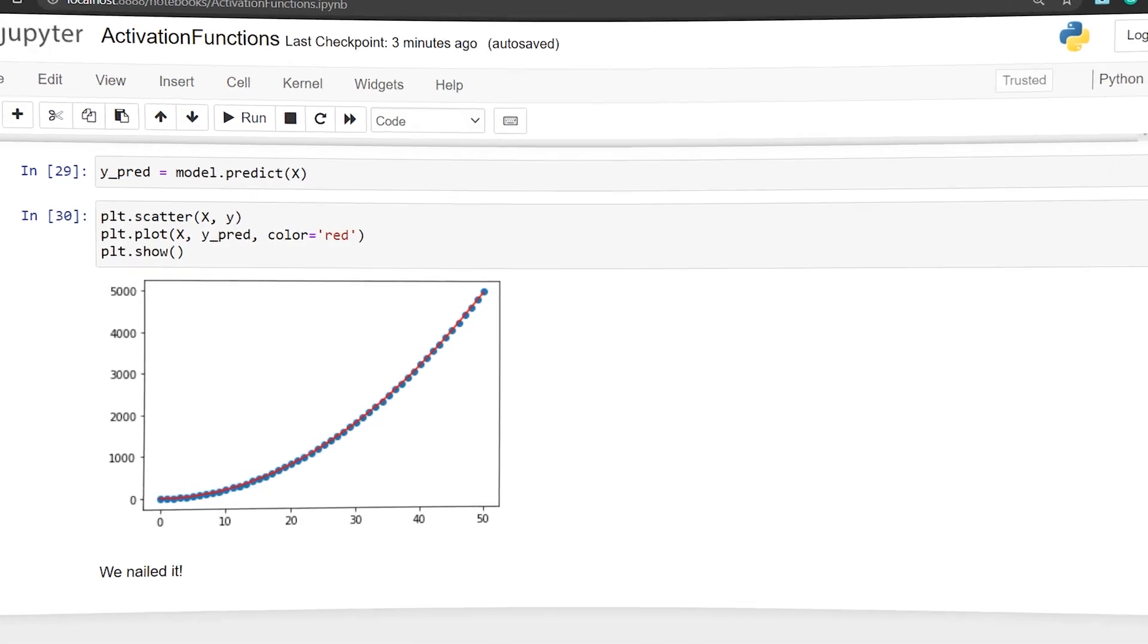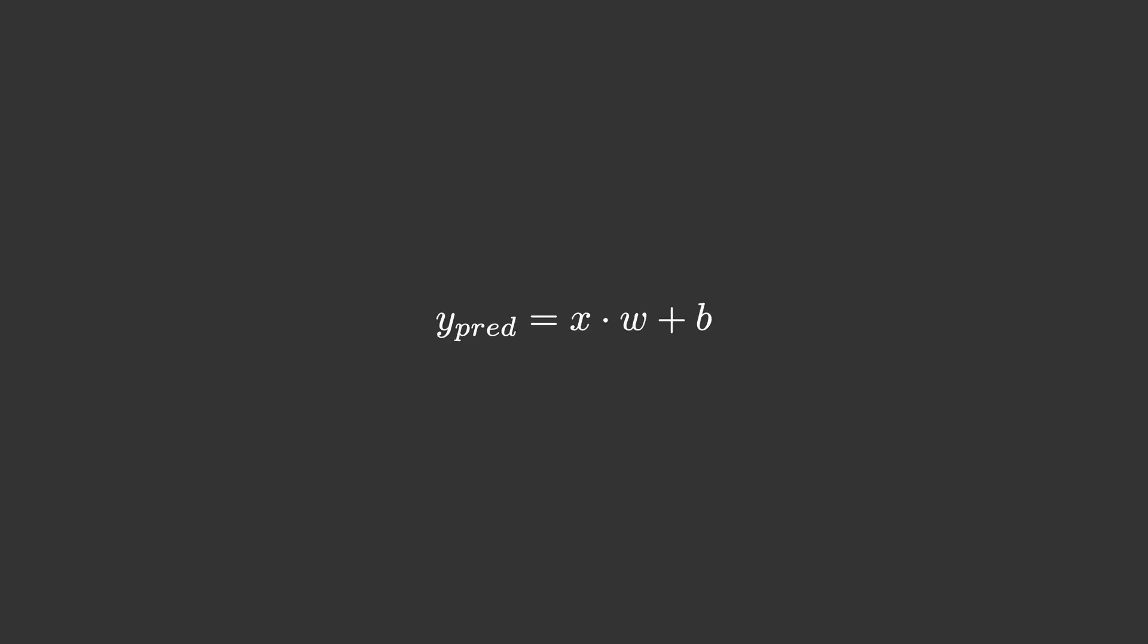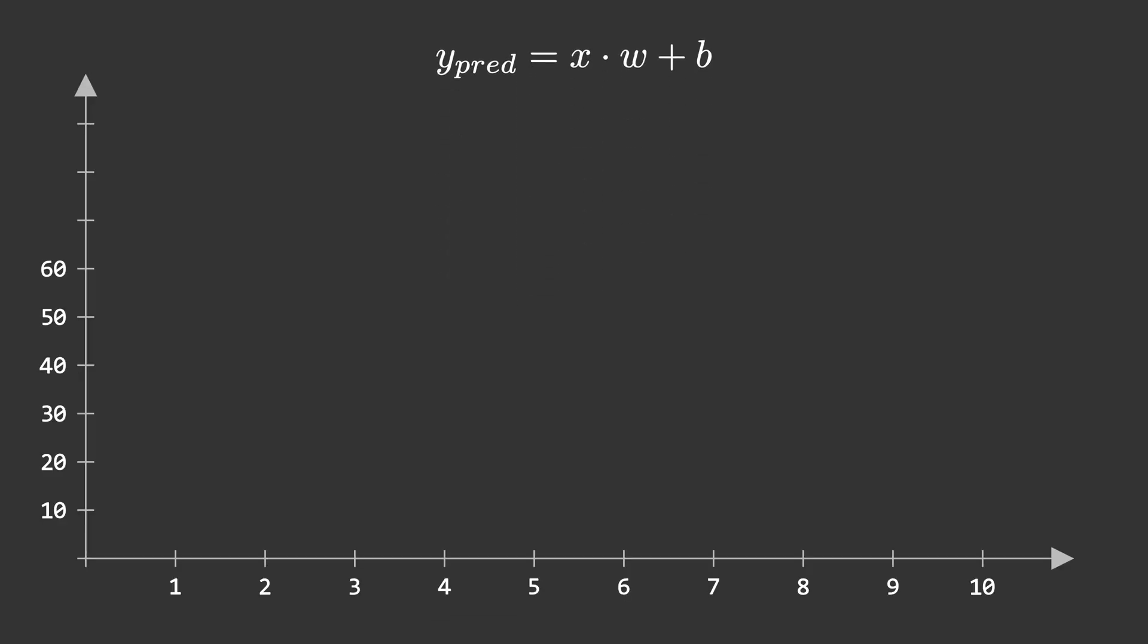When we work with real world data, it is way more complex than this, so activation functions are almost every time required. But how do the activation functions do that? We derived the formula of y predicted in the previous video, but it wasn't enough to fit on non-linear or complex data.